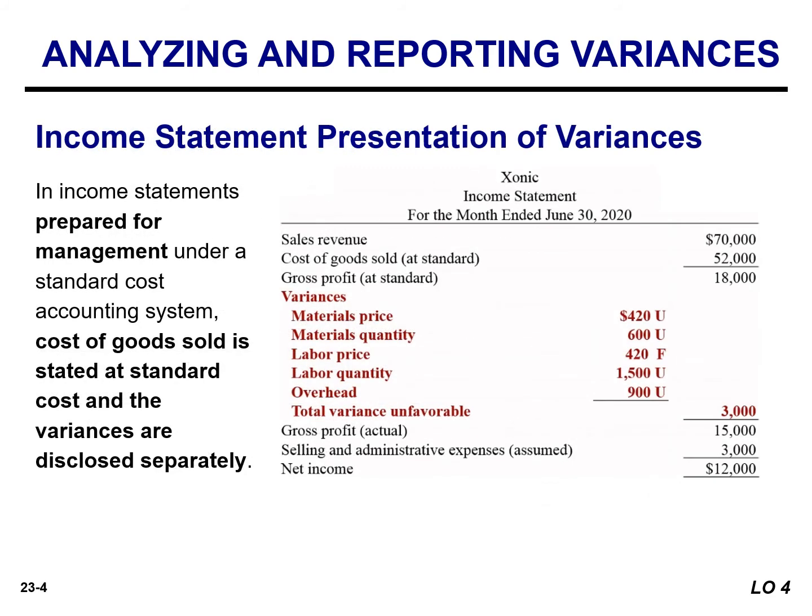If the income statement is prepared for management under a standard cost accounting system, cost of goods sold is stated at standard cost, and the variances are disclosed separately. Unfavorable variances increase cost of goods sold, while favorable variances decrease cost of goods sold.